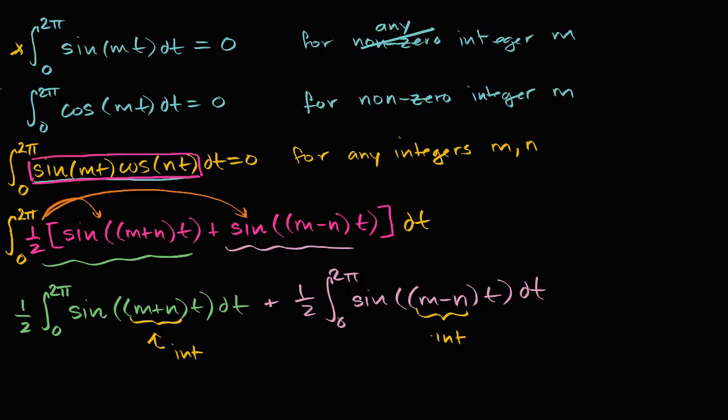We've already established that the definite integral of sine of some integer times t dt is zero. So by this first result, this equals zero, and that equals zero. It doesn't matter that you're multiplying by one-half. One-half times zero is zero. This whole thing evaluates to zero. So there you go, we've proven that as well.